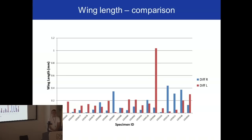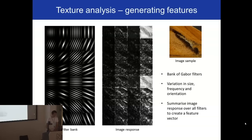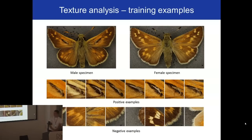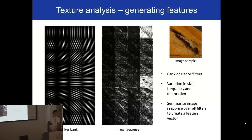A question about Gabor filter orientation: the orientation is inherently important when applying Gabor filters, so if there's a slight skew — even two or three degrees — does that affect the Gabor filter results? The answer is yes, it will affect it. However, for the Gabor filters there's a fairly coarse difference between the orientations, so for this application it shouldn't affect it too much, though there is certainly some effect.